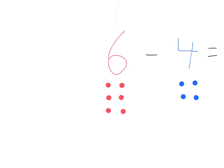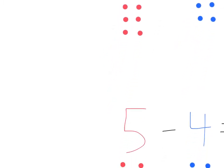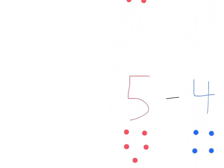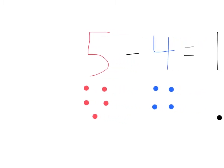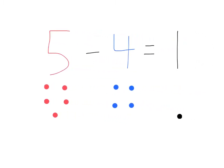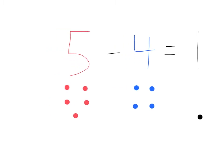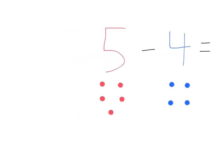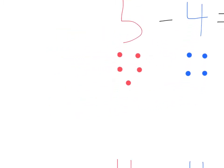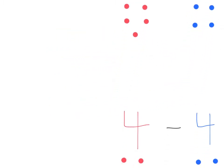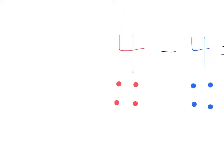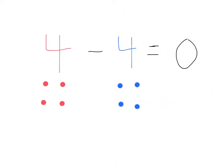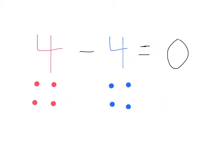Getting smaller and smaller. 5 minus 4 equals 1. Last one: it is going to be 4 minus 4. 4 minus 4 equals 0.